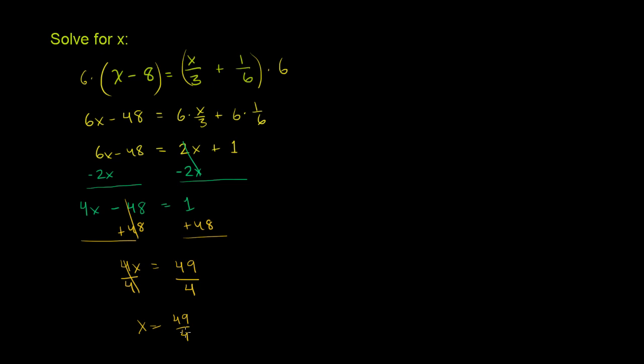Well, let's check to see whether 49 fourths is indeed the answer. So let's put it into the original equation. Remember, the original equation is what we have in green here, before we multiplied it by 6. But in theory, we should be able to put it into any of these steps, and the x should satisfy. But let's do it in our original equation.